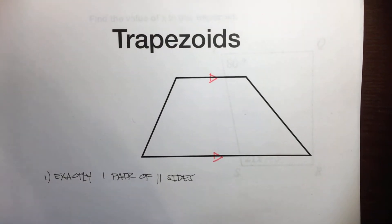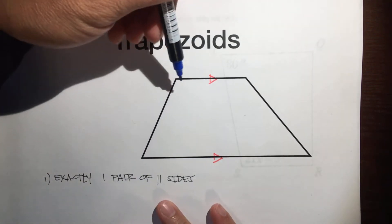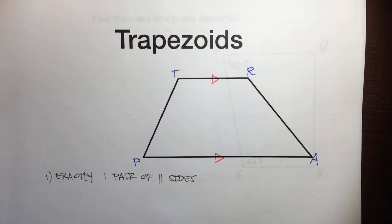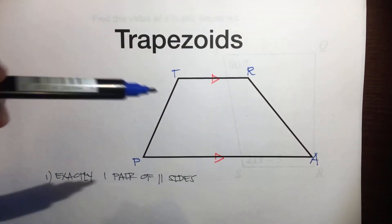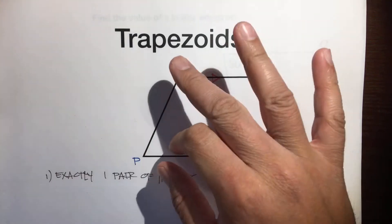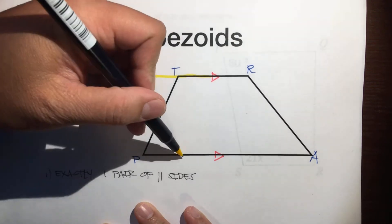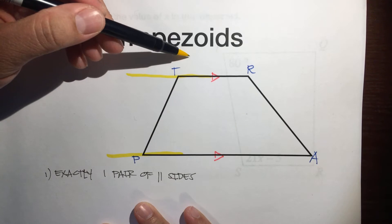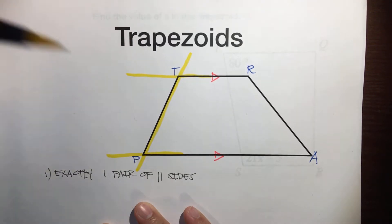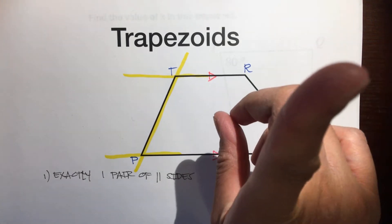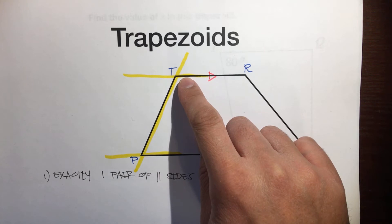They won't ever intersect — they never intersect. So, let's name this trapezoid T-R-A-P. What an original name — trapezoid TRAP. Because these lines are parallel, just these two, it tells us something. If we draw this and this, those are the parallel lines. If we highlight that, that's a transversal. And so, my question for you is: what is true about angle T and angle P?